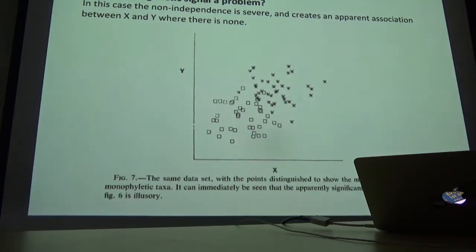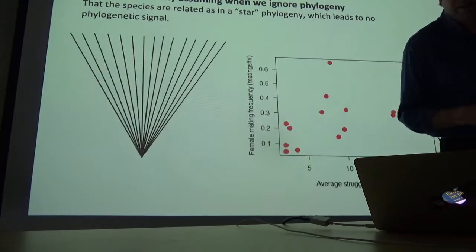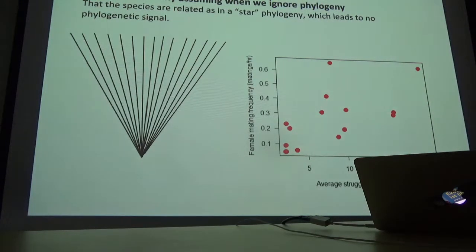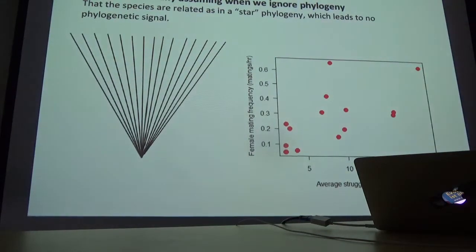When you use different symbols to show the two groups, you recognize that within each group there is absolutely no association between x and y, and there's really only one data point that is the cause of the apparent correlation — the very first split in this worst case scenario phylogeny. Felsenstein made it clear that we can't count every species as an independent observation. Whenever we carry out ordinary statistics on our group of species, we are making the assumption that all species are equally related to one another — and that assumption is violated by just about every phylogenetic tree you or I have ever looked at. The assumption of conventional statistics is a star phylogeny — basically no history, no varying degrees of relatedness among the species.